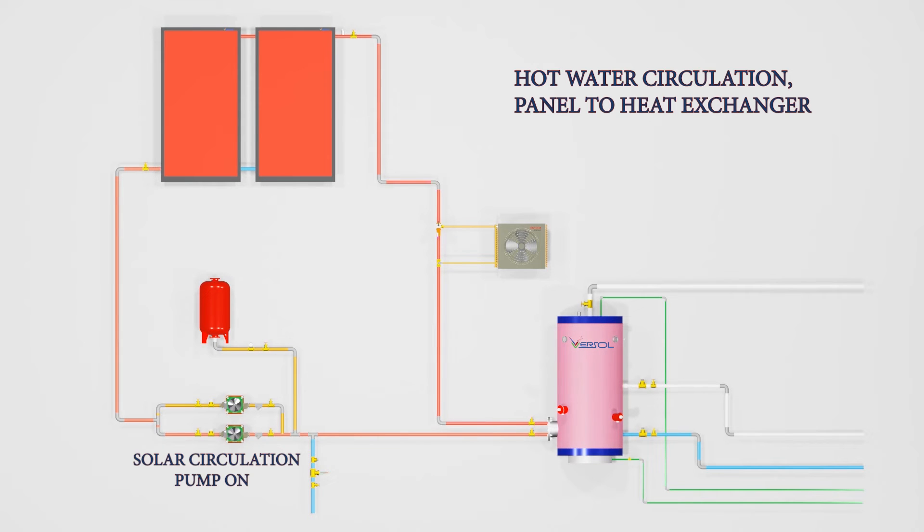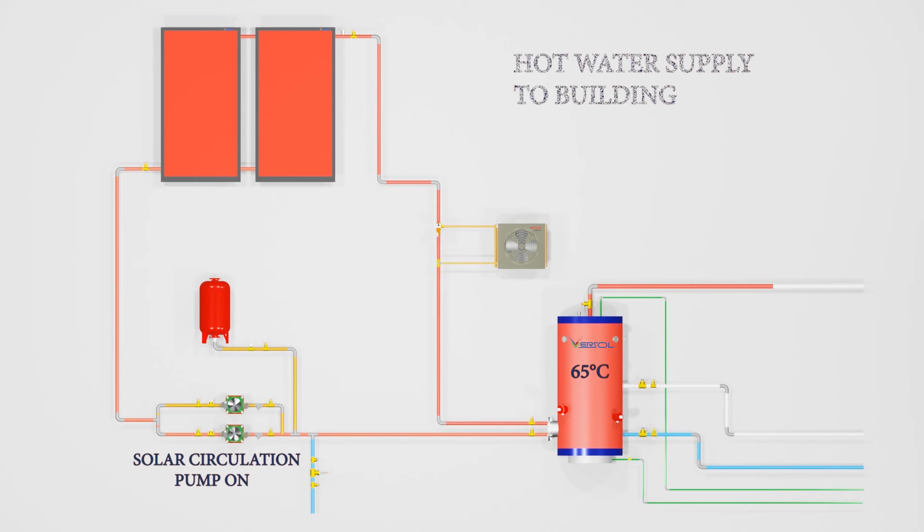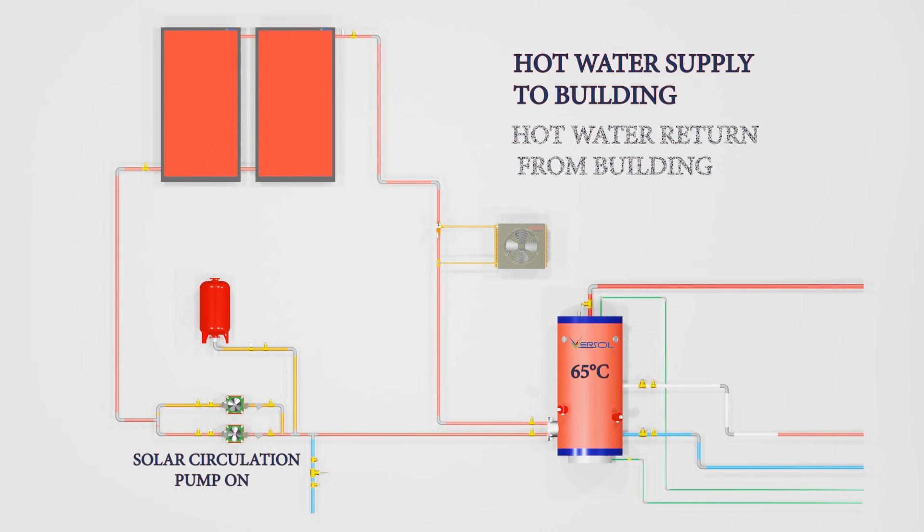In continuous operation, the storage tank temperature increases. Once the system reaches the set temperature, solar circulation pump will be turned off to avoid overheating. Now you can start the hot water circulation pump and enjoy your hot shower. Hot water from the building returns to storage calorifier and the entire process continues.